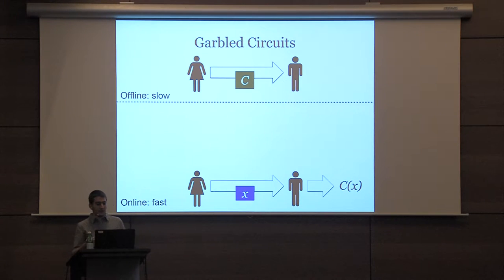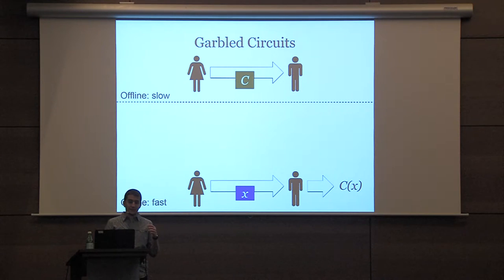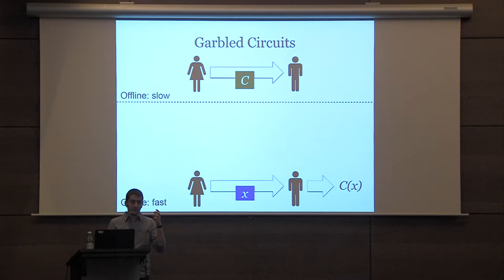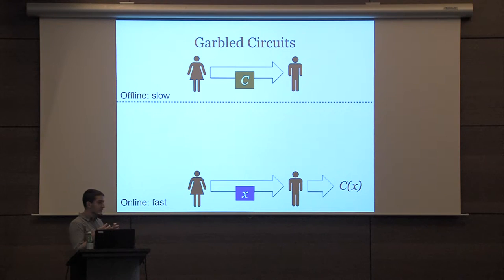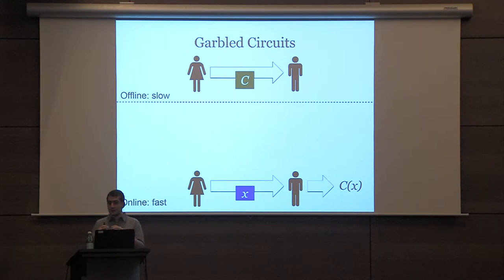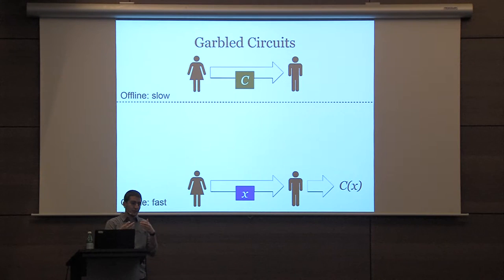Let's start by talking about garbled circuits. In a typical setting for garbled circuits, there are two parties. Alice is on the left, and she has some circuit C that she wants Bob to be able to compute on an input x. Before she knows the input x, she's going to garble the circuit and send it over to Bob. This operation can take time proportional to the size of the circuit. Then later, she gets input x and wants to quickly send it to Bob, garbled, so that Bob can learn C of x and nothing else.